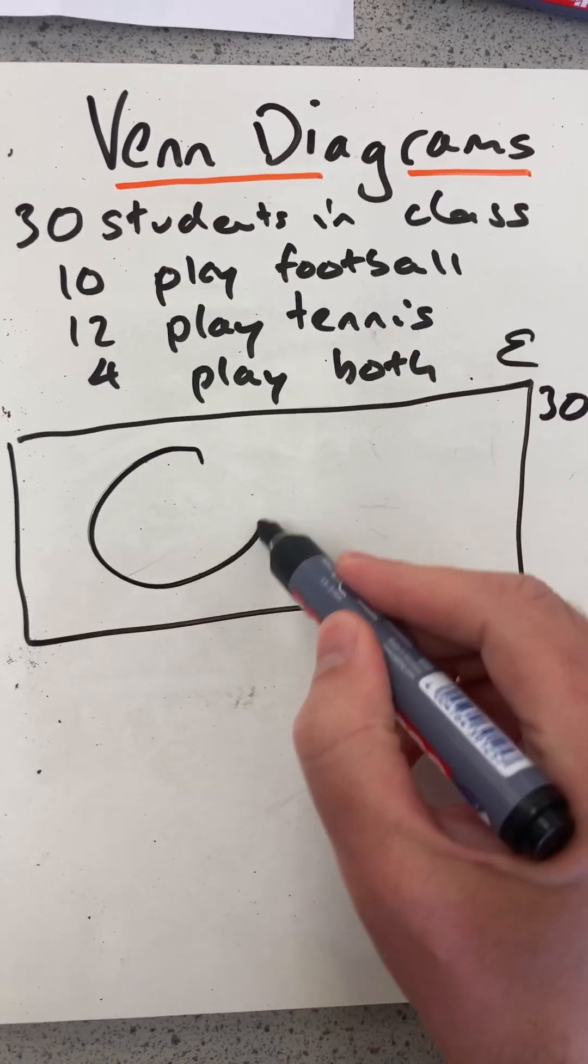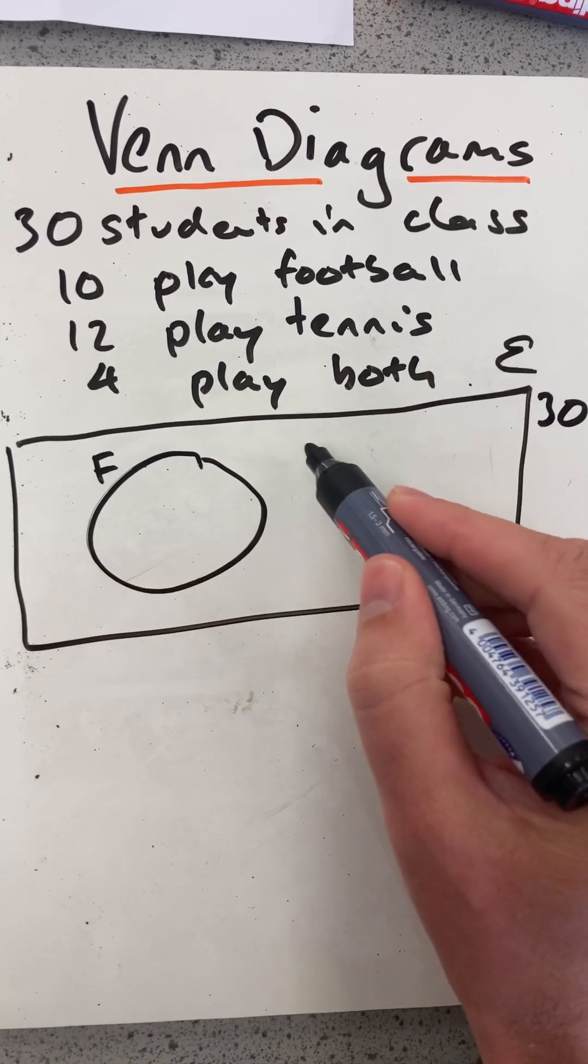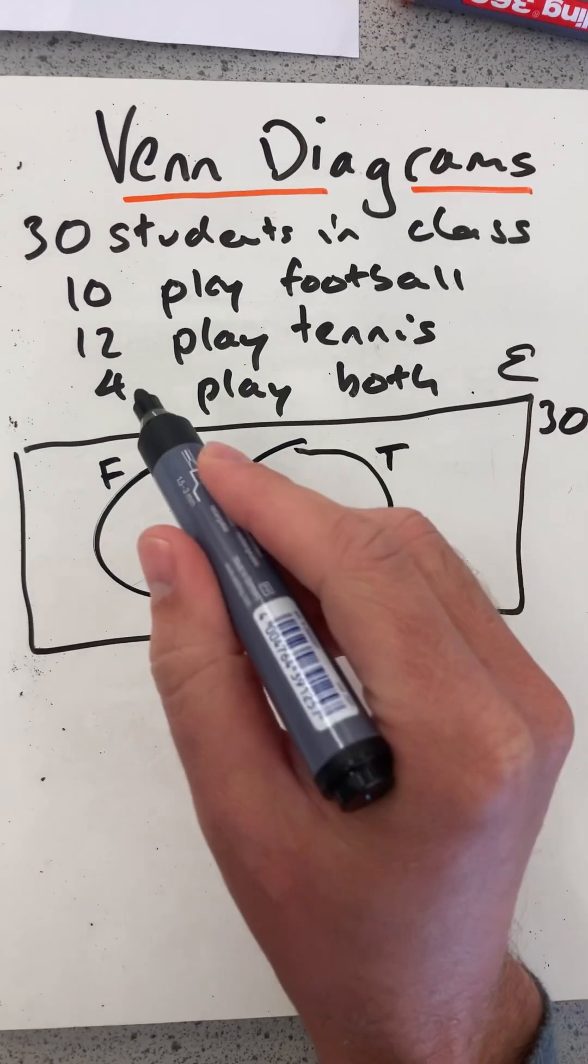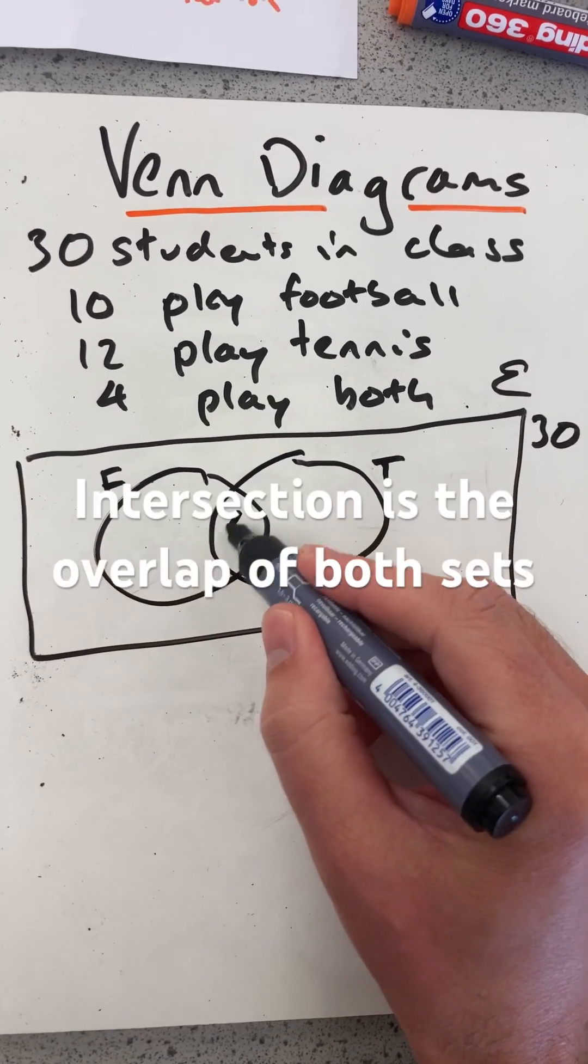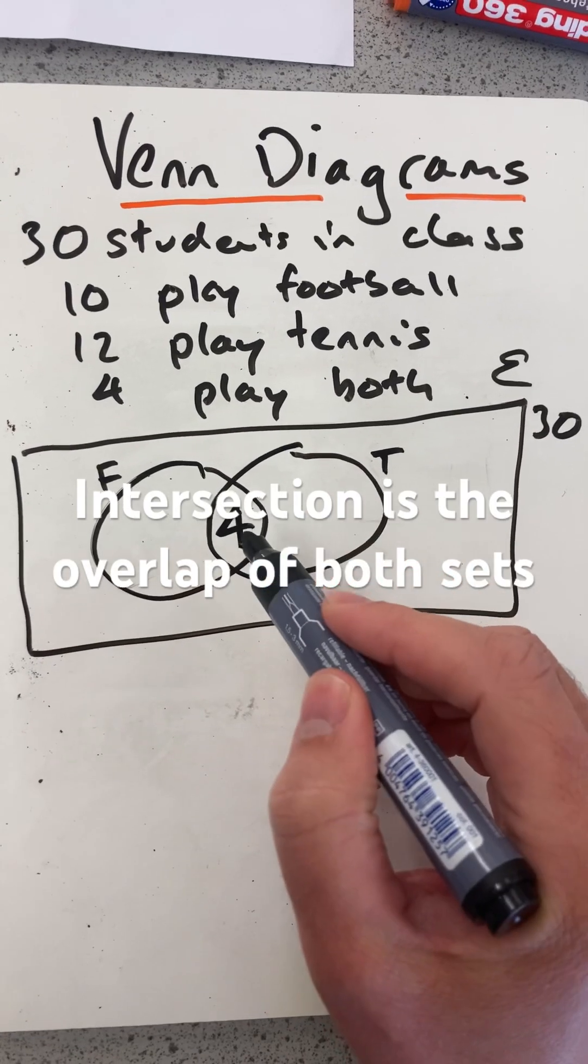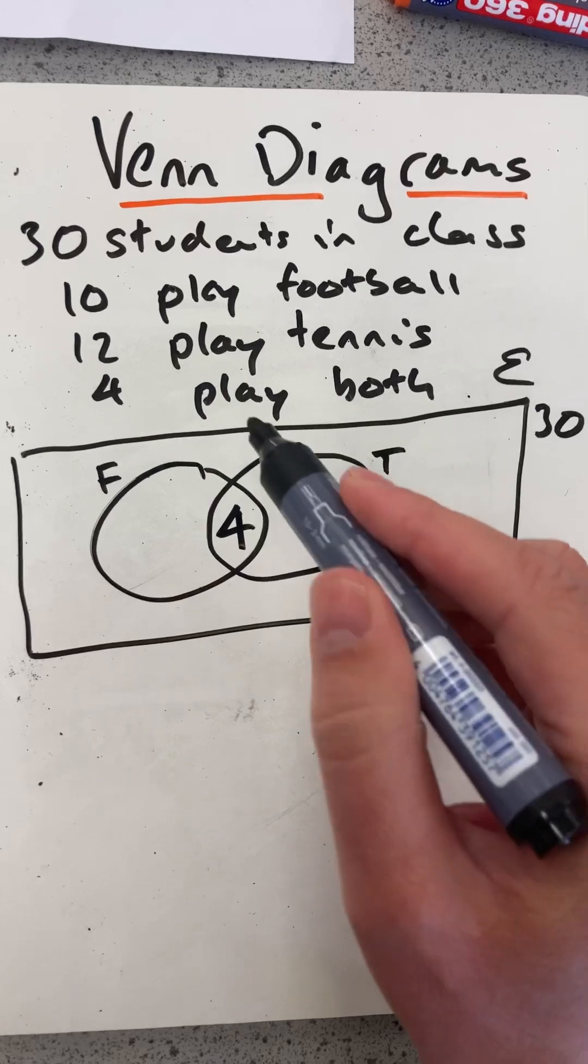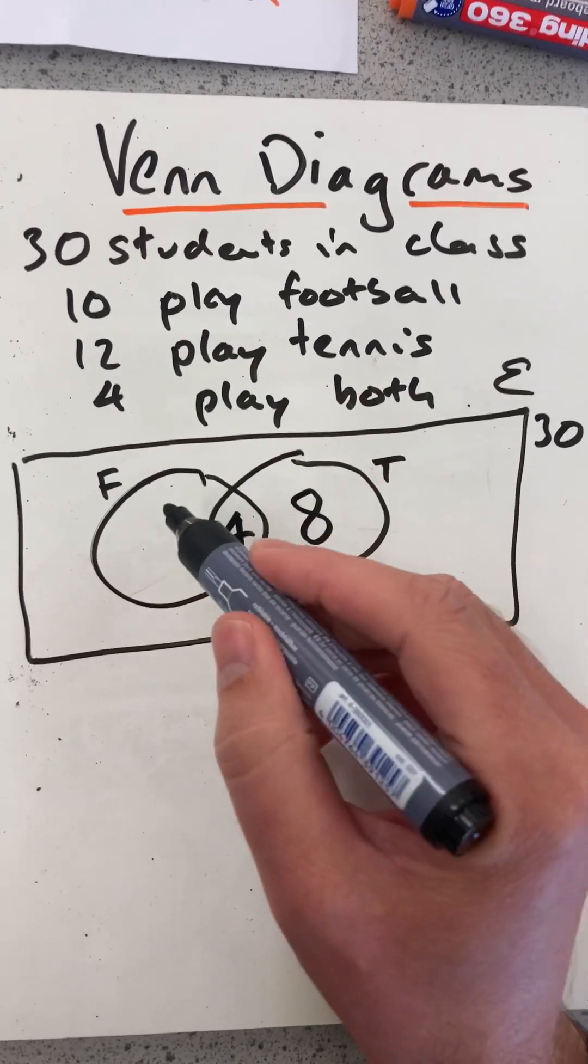And 10 play football, I'll put in that circle. 12 play tennis, I'll put in that circle. But I'm going to start with the intersection overlap, so I'm going to put the 4 there. Meaning, the tennis is now going to be 12 minus 4, and the football is going to be 10 minus 4. That goes there.